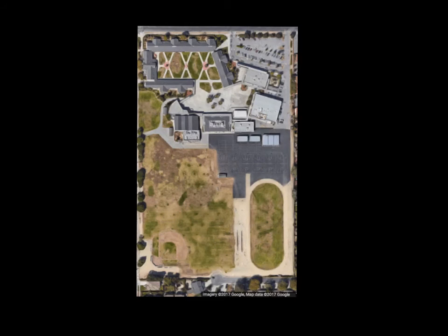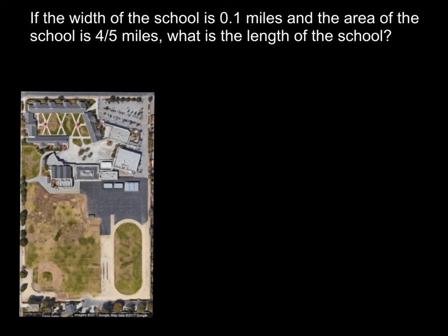Here we have a satellite image of our school, which works out very well to be a rectangle, and I want us to use this and your prior schema to help solve this next problem. If the width of the school is 1/10 of a mile and the area of the school campus, the entire school, is 4/5 of a mile, what is the length of the school? That's a little bit bigger than our school really is, but for the sake of our problem, that's what we're going to do. Think about what it's really saying. Remember this is your width, 1/10 of a mile, and we know that this entire area is 4/5 of a mile. How can you find this value here? Think about what I want you to write first and think about how you can solve that.